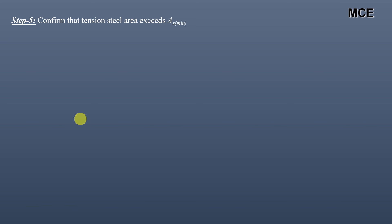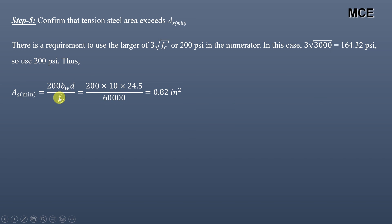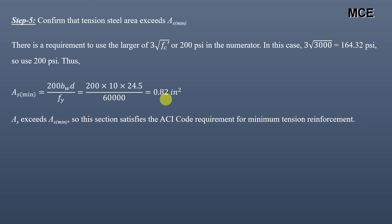Finally, we check whether this section satisfies the ACI code minimum tension reinforcement requirement. The minimum steel is As,min = (larger of 3√f'c or 200 psi) × bw × d / fy. In this case, 200 psi governs, so As,min = 200 × 10 × 24.5 / 60,000 = 0.82 in². This is clearly less than the As provided, so the section satisfies the ACI code requirement for minimum tension reinforcement.